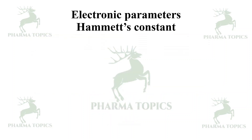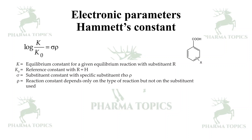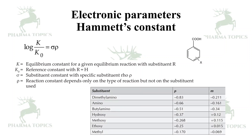For electronic parameters, Hammett's constant uses the formula: log(K/K₀) = ρσ, where K is the equilibrium constant with substituent R, K₀ is the reference constant with R = H, σ is the substituent constant, and ρ (rho) is the reaction constant that depends only on the type of reaction, not on the substituent. As the substituent changes at the ortho, para, or meta positions, the constant changes — this is the Hammett constant descriptor.